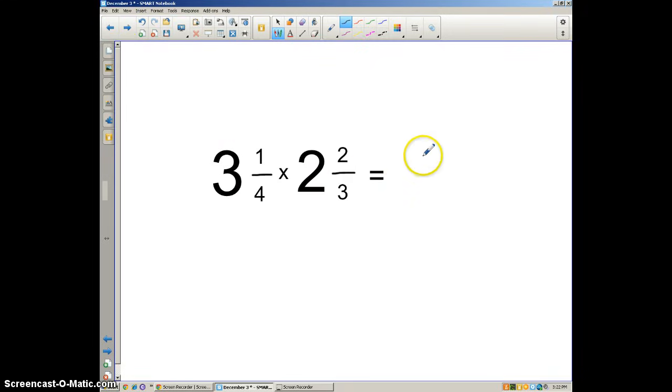So 3 and 1/4 times 2 and 2/3 is going to give me 8 and 2/3. And that is reasonable because I have more than 3 here, and I have more than 2. And so if I had just 3 times 2, that would be 6. Since this is greater than 3, this is greater than 2.